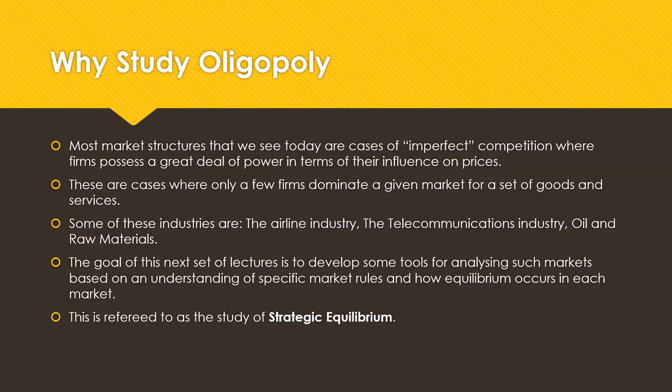Let's talk about why you should study oligopoly. Most market structures we see today are cases of imperfect competition, where firms possess a great deal of power in terms of their influence on prices. These are cases where a few firms dominate a given market for a set of goods and services. Examples of some of these industries are the airline industry, the telecommunications industry, oil, and raw materials.